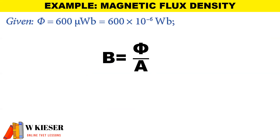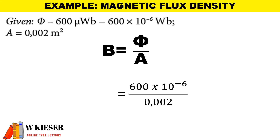If we are given a magnetic flux of 600 microweber, to convert microweber into Weber we multiply by 10 to the power of minus 6. If our area is 0.002 metres squared, we must determine the strength of the magnetic field in Tesla. Multiplying 600 by 10⁻⁶ divided by 0.002, the magnetic field strength is 0.003 Tesla.